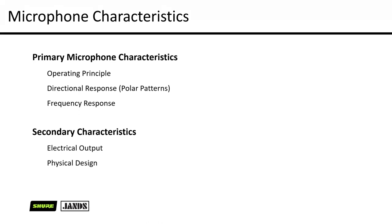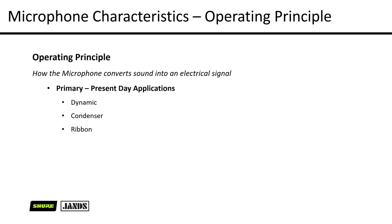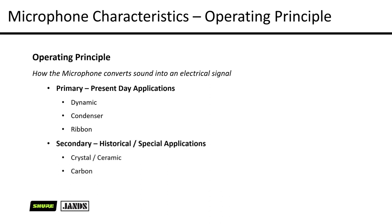First off, we have the operating principle — how the microphone is able to convert sound into an electrical signal. There are a few different types of microphones which capture sound slightly differently, giving us slightly different outputs. We have dynamic, condenser, and ribbon microphones, but we also have some slightly historical types — crystal, ceramic, and carbon-based microphones — which we're not going to cover today as they are more historical and rarely used except in very specialized applications.